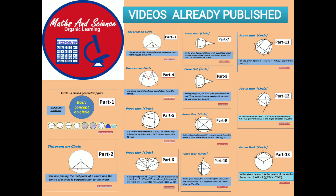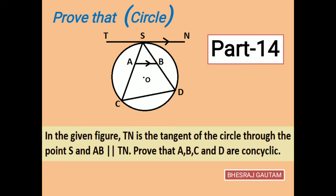Please do subscribe the channel, share the videos and click on the notification icon for regular updates. In the given figure, TN is the tangent of the circle, which is parallel to the line segment AB, and we are expected to prove that A, B, C and D are concyclic points of a circle.